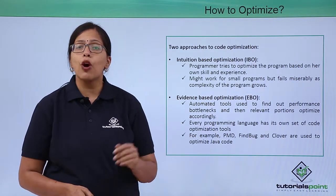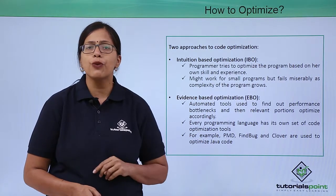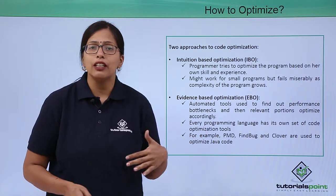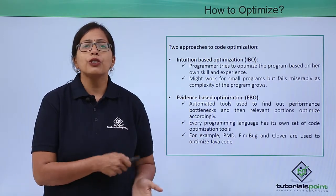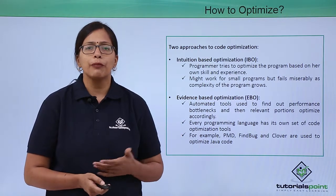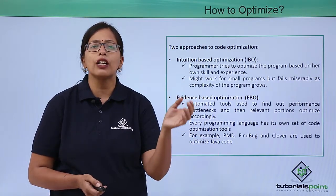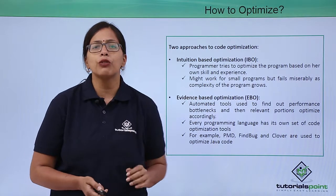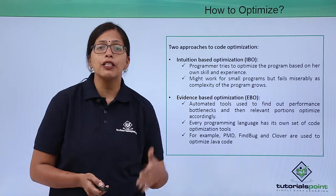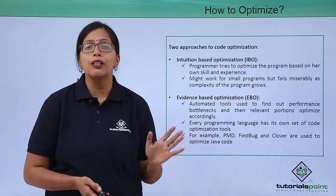There are two approaches to optimization. The first one is intuition-based optimization. Many programmers use just their skills and programming expertise to optimize the program. They read the program and due to their expertise and prior experience, they know that an instruction will take more memory space, or that part of the program can be written in fewer statements in a better way. That is called intuition-based optimization, or IBO.